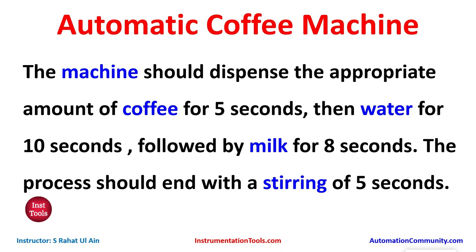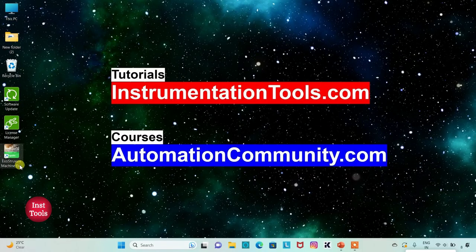The process should end with a stirring of 5 seconds. In this case we will use a normally open contact for the start button, and then we will use some timers like TP and TON. Let's move to EcoStructure Machine Expert where we will draw a ladder diagram for this example.